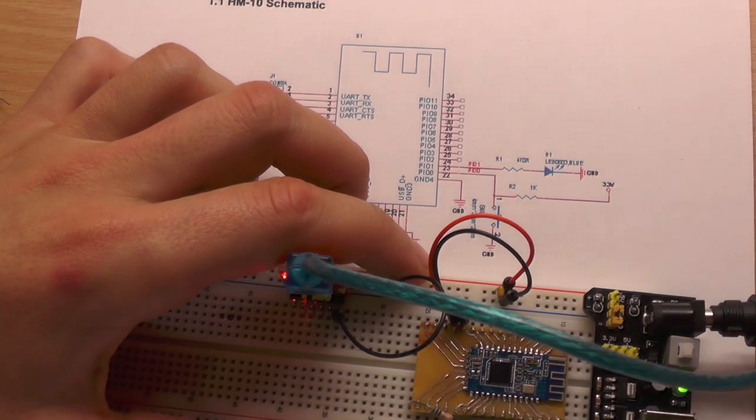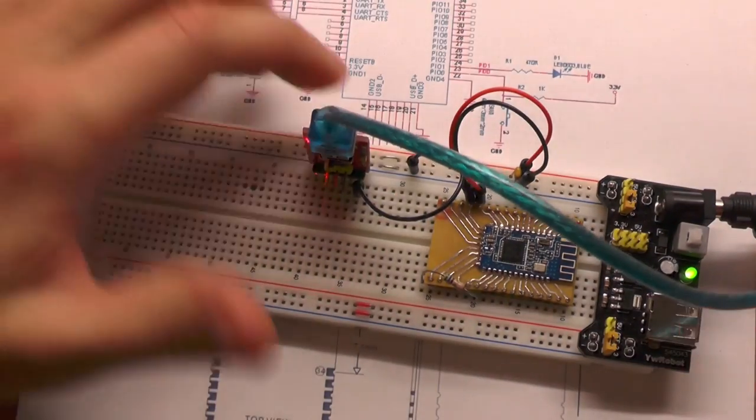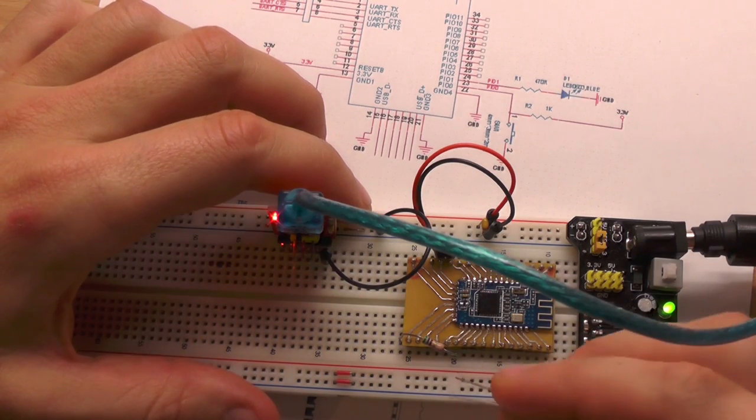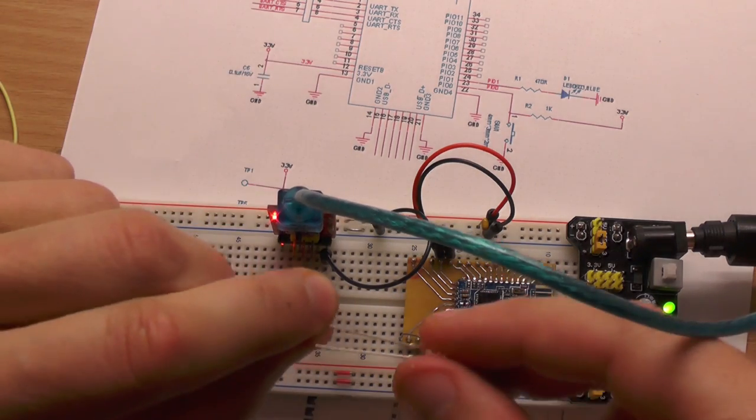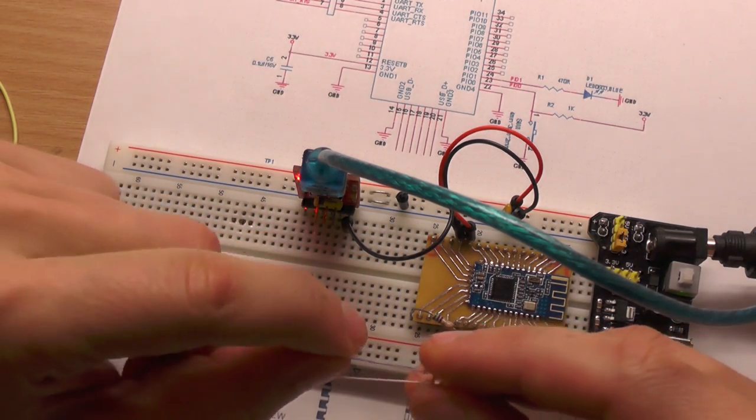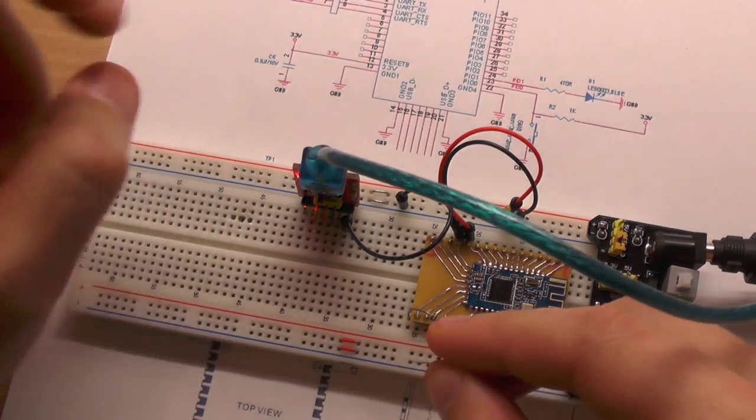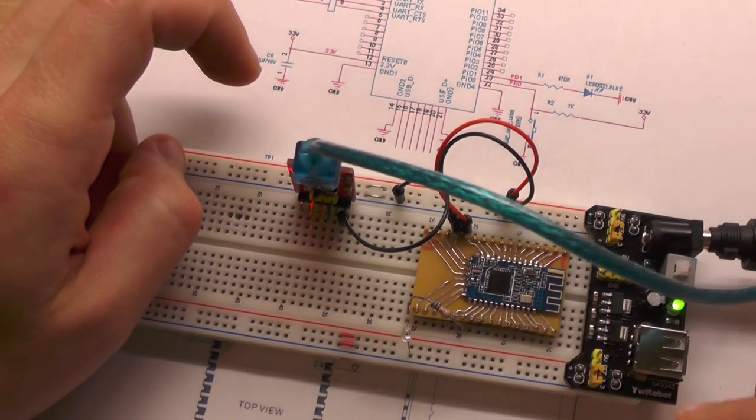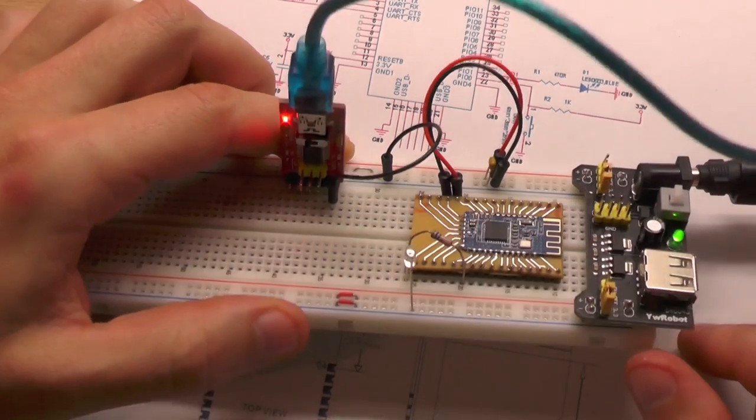Then we have to connect this to ground so we're getting power from the module here and plus is the longer one, so we just put plus here and minus there and we can see the LED is blinking, so the module is running.